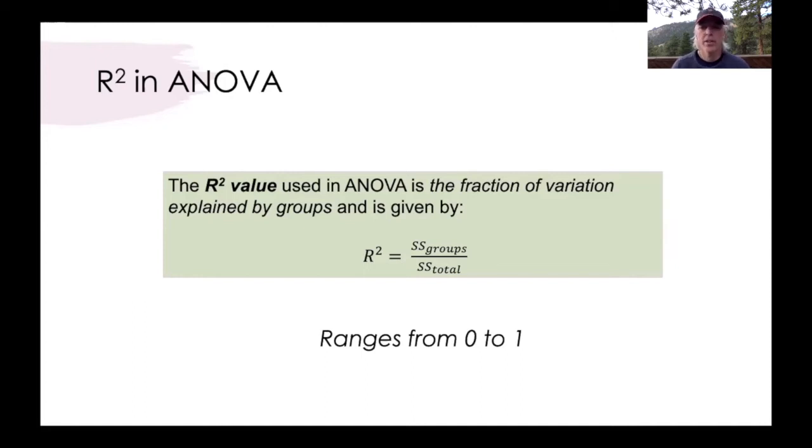Most of the time it falls somewhere in between and in most cases in ecological studies R-squared values might fall in and around a number like 0.2.